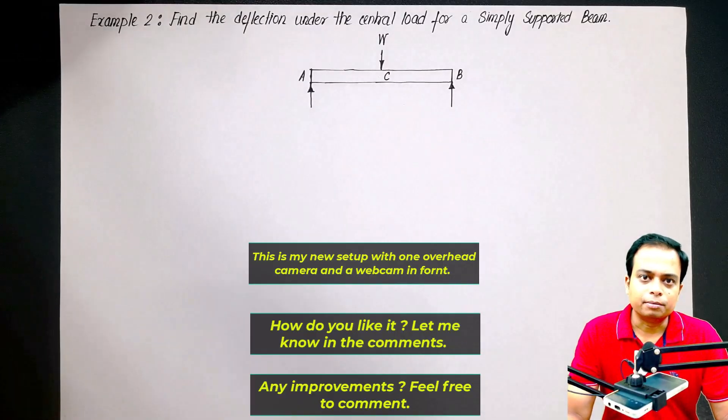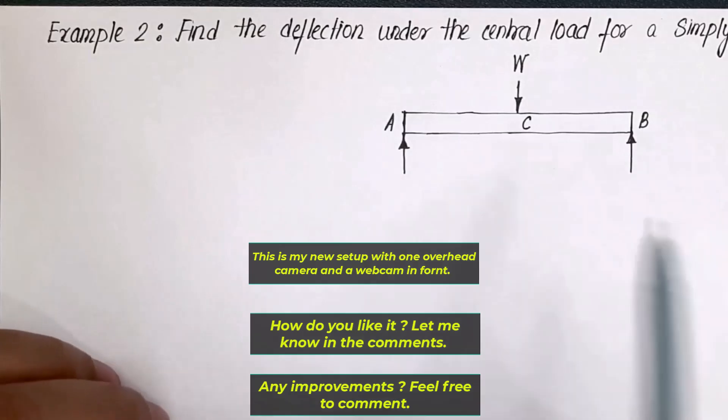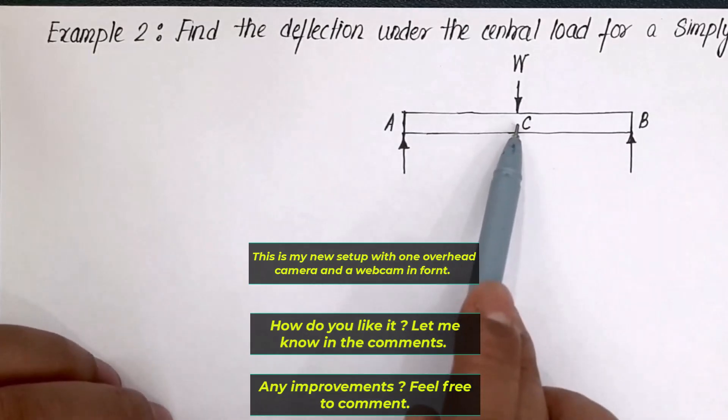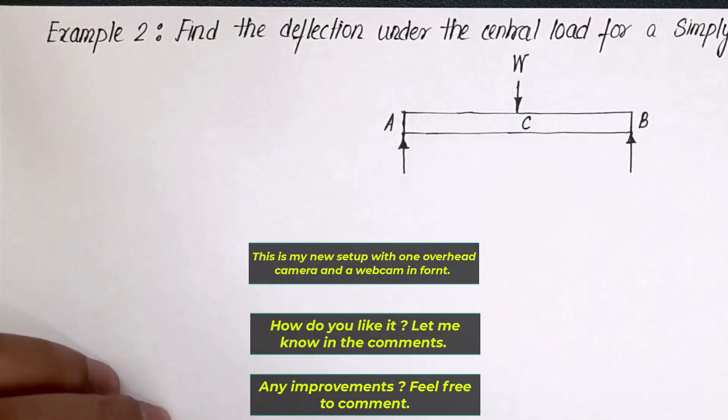Okay, so this is going to be Example Number 2, where we are going to apply Castigliano's theorem and find the deflection of the beam under this central load. Now, what is Castigliano's theorem? First of all, you must know this, and I think this is something that I have taught you in the previous lecture. Just take a look at this.